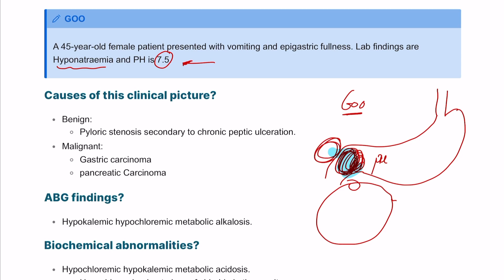The lab findings show hyponatremia and pH is 7.5. We're going to focus on electrolyte imbalance in this particular condition because the patient has significant vomiting, which means significant loss of electrolytes including sodium, potassium, chloride, and hydrogen.